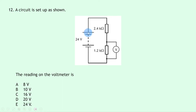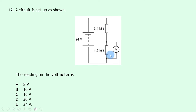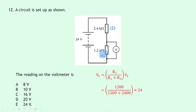Question 12: a series circuit has a 24-volt supply and two resistors — 1.2 kΩ (lower, R1) and 2.4 kΩ (upper, R2). This is a potential divider. Using V1 = R1/(R1 + R2) × Vs = 1200/(1200 + 2400) × 24 = 8 volts, which is answer A.